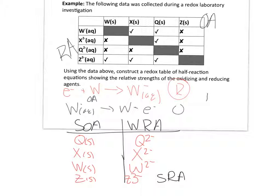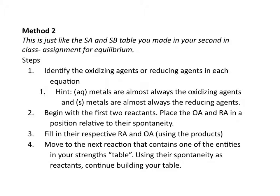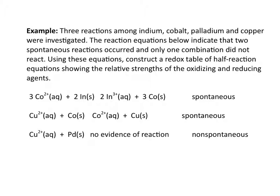For the second method, we are given reactions where spontaneity is indicated, and we build the table using the same spontaneity idea. This is similar to the strong-acid/strong-base table from equilibrium. Step one: identify the OAs and RAs in each equation — aqueous metals are almost always OAs and solid metals are almost always RAs. Begin with the first two reactants, place the OA and RA relative to spontaneity, then move to the next reaction containing one entity already placed in the table.